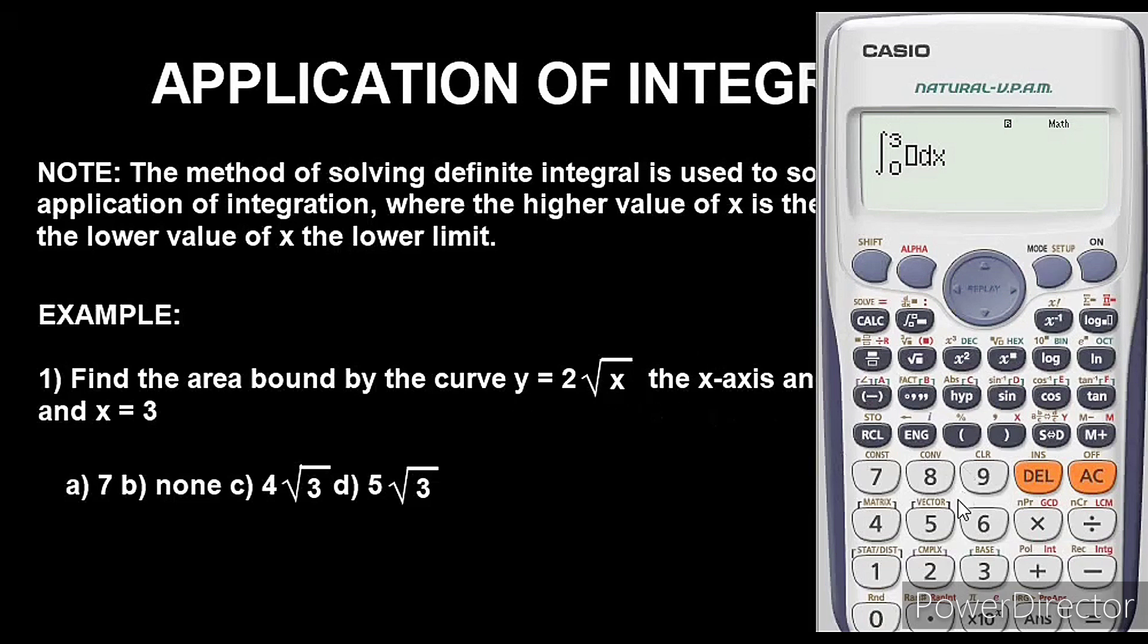So we have 2 root x. To bring out x we press alpha x. You have to press alpha first before pressing x. If you just press x alone without pressing alpha it will not come out, so you have to press alpha first before pressing x. Very important, so take note of this.